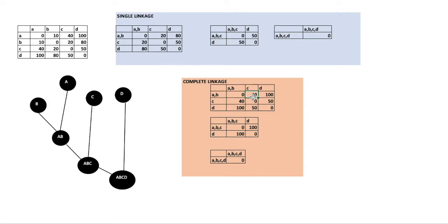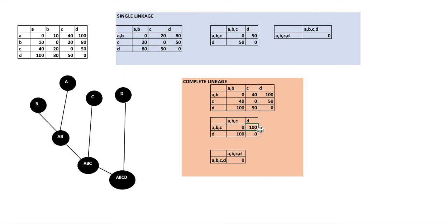We write 40. Then A to D is 100 and B to D is 80, so the maximum distance is 100, and we write 100. The next step is to find the nearest closest pair, which is AB to C at 40, so we merge AB and C. Now from AB to D the distance is 100 and C to D is 50, so the maximum distance is AB to D at 100. We write 100 here.